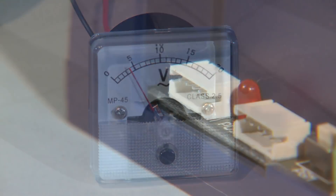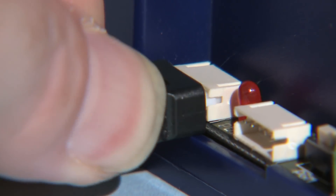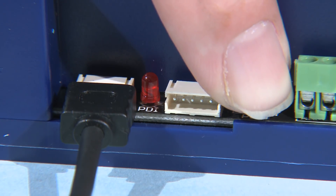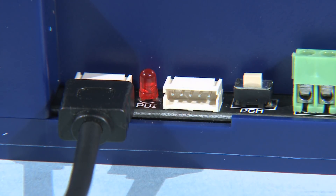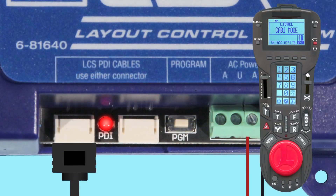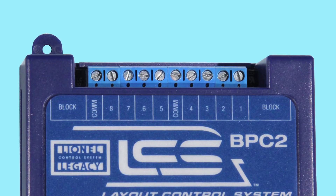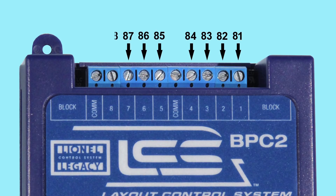When installed, the BPC-2 must be configured. First, hold the program button for one second, and the red LED light will flash on and off. On the CAB-2, press TR followed by the desired ID from 1 to 91, then press SET. As we have seen with other TMCC devices, the first slotted component is assigned your desired ID number, and the following slots are assigned consecutive ID numbers.